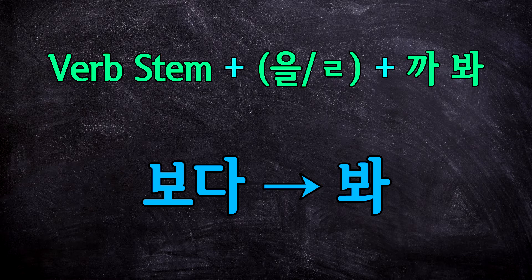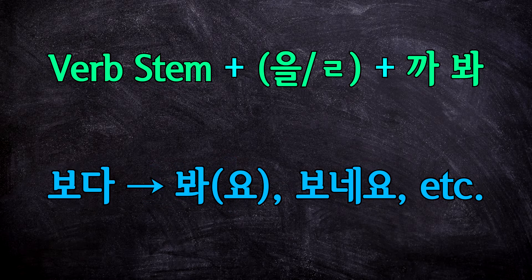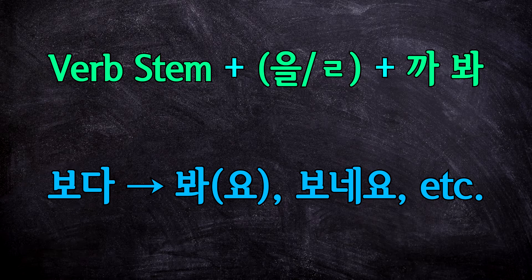This means that you might also see other ways that this grammar form can be conjugated. For example, you might see 봐요 or 보내요, and others depending on how it's used. And once you learn this regular form first, you'll also be able to use those in your own sentences.